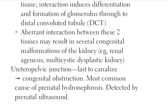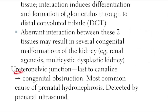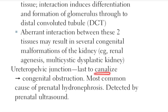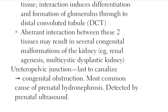The ureteropelvic junction is the junction between the ureter and the pelvis in the kidney. It is the last structure to canalize, and hence it is the most common site of congenital obstruction. Since it is the last one to canalize, there is deposition of various substances which leads to stone formation, obstructing this junction. This can be easily detected in pregnancy by prenatal ultrasound and is seen as prenatal hydronephrosis.